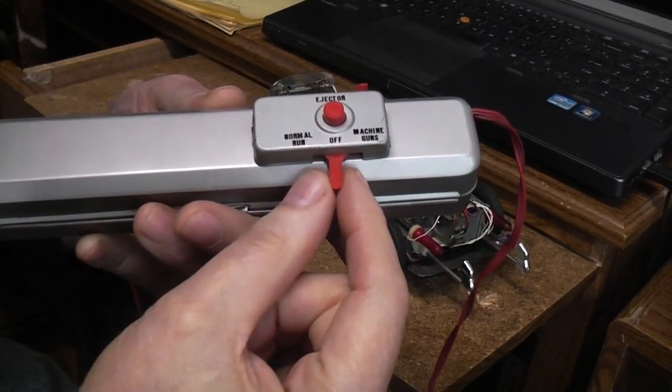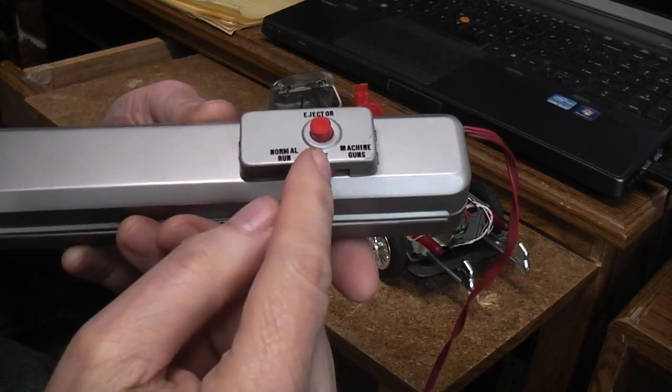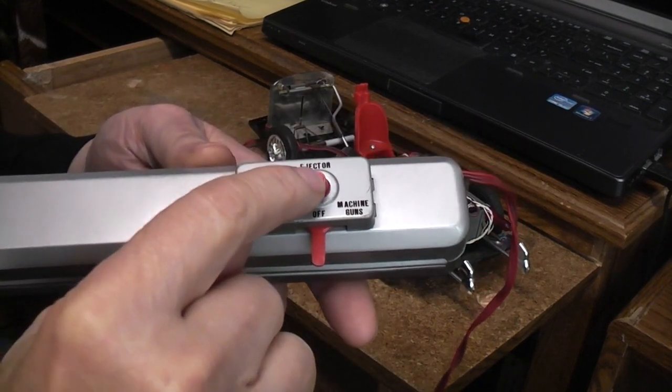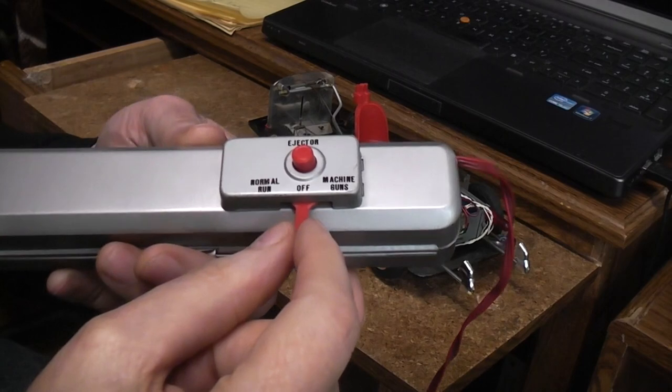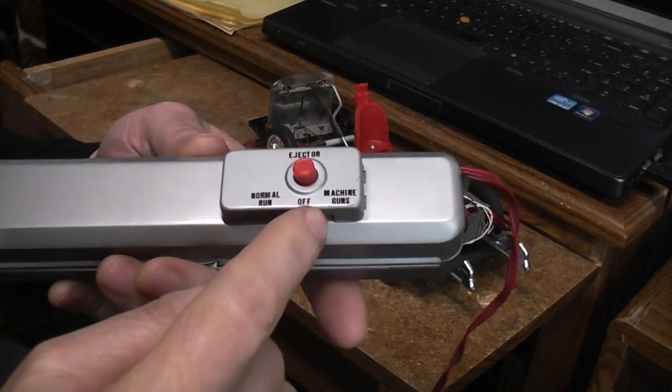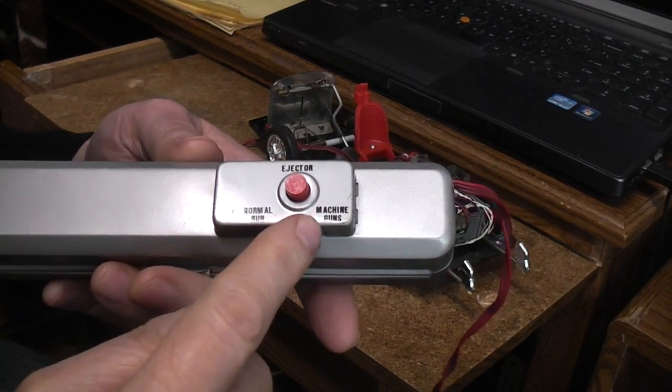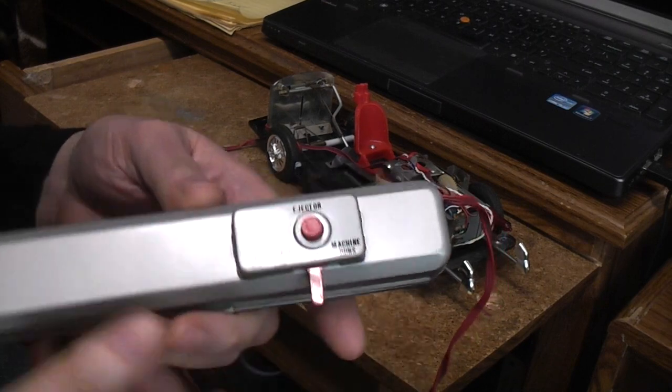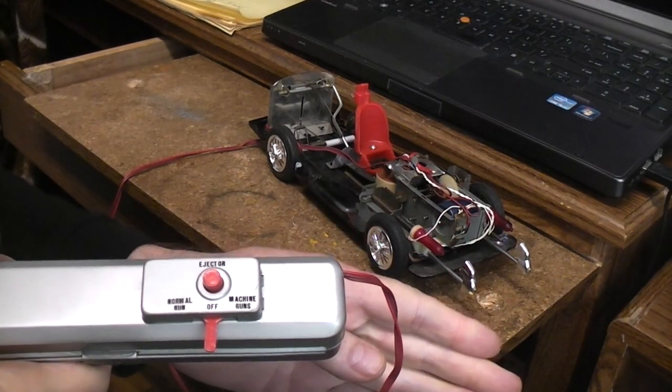You have a main lever. Center is off. In off, nothing works, not even the eject button. Normal run would be over this way, and run with machine gun would be over this way. That's when the machine guns would extend out the front.